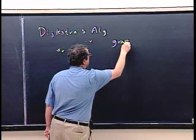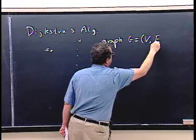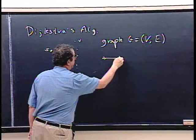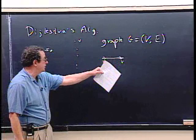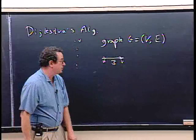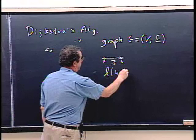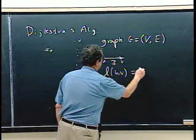The graph G consists of a set of vertices V and a set of edges E. Every edge in that graph is directed — we're talking about a directed graph — and every edge has a distance. To establish a notation, L of U, V is the length of the edge from U to V. In this little example, it's equal to 3.